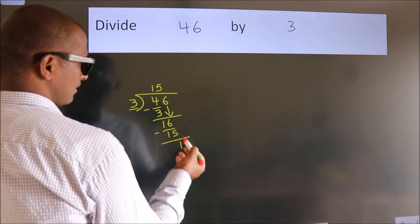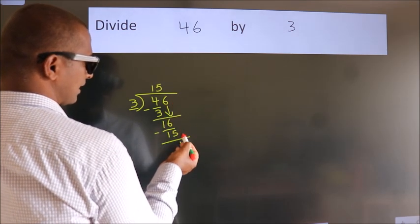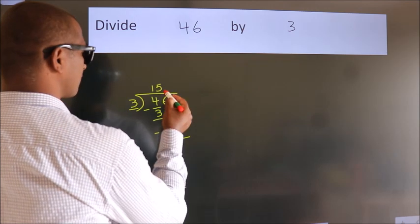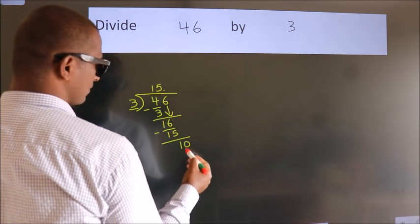After this, no more numbers to bring down. So what we do is, we put a dot and take 0. So, 10.